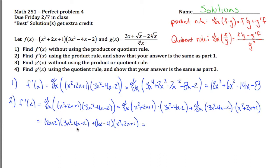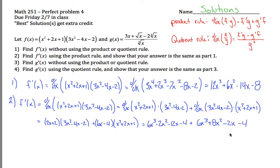Multiplying 2x plus 2 times 3x squared minus 4x minus 2: taking 2x and 2 and multiplying each by the three terms gives 6x cubed minus 2x squared minus 12x minus 4. Then add the product 6x minus 4 times x squared plus 2x plus 1, which gives 6x cubed plus 8x squared minus 2x minus 4. Combining like terms: 6x cubed and 6x cubed is 12x cubed; negative 2x squared plus 8x squared is positive 6x squared; negative 12x minus 2x is minus 14x; and negative 4 minus 4 is minus 8.